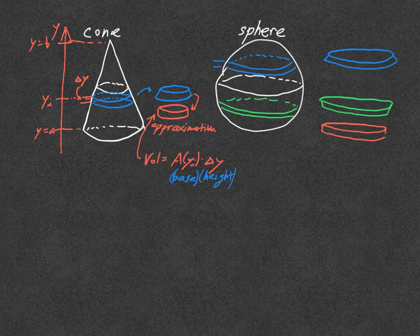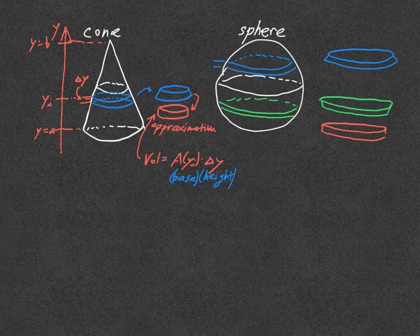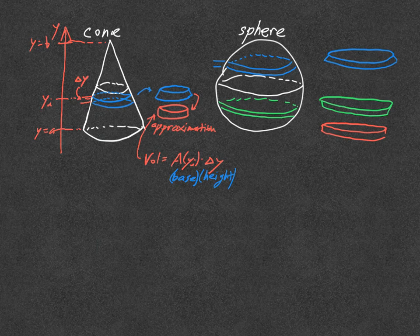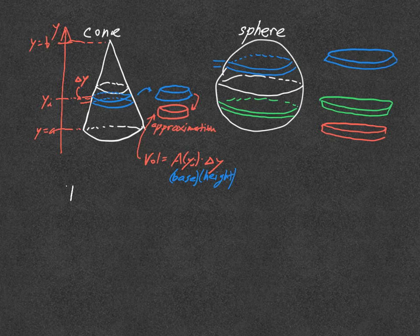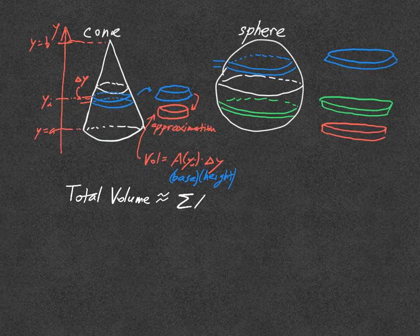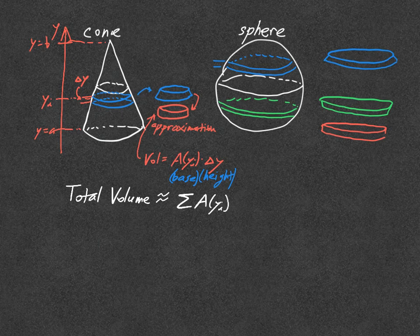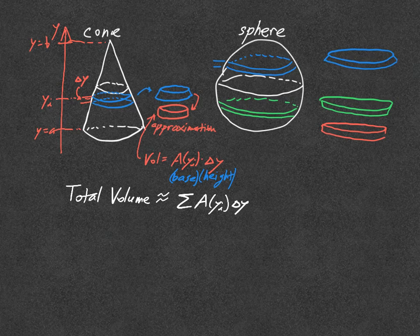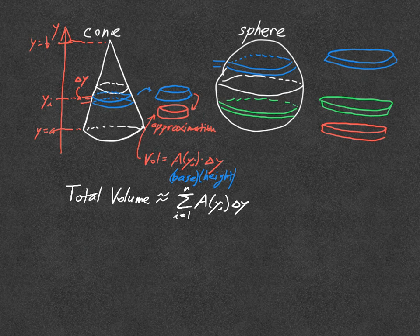And we're going to do this, we're going to slice this in a bunch of different places. So we're going to have a bunch of different little y sub i's and add up all, add up all the volumes of those little approximating cylinders. So what we get is that the total volume is approximately given by the sum of the area of the slice at height y sub i times the thickness of each slice. And this might be i equals one to n or something like we had in a Riemann sum.